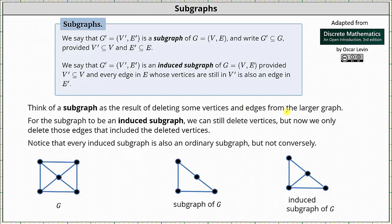So for example, if we have the graph G below, we can form a subgraph by deleting some vertices and edges. For example, if we delete this vertex, this edge, this edge, this edge, and this edge, we have a subgraph of G shown here in the middle.